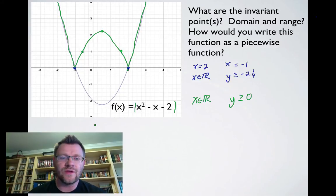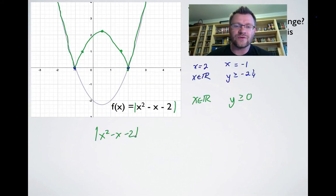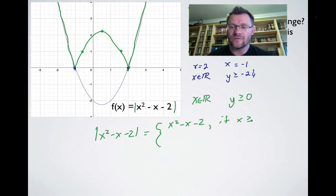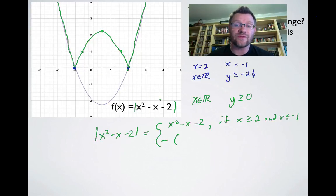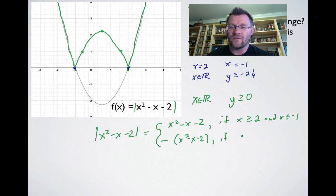To write this as a piecewise function: the absolute value of x² - x - 2 equals x² - x - 2 if x ≥ 2 or x ≤ -1, and equals -(x² - x - 2) if -1 < x < 2. Note: I shouldn't have equal signs in both parts — if I've got the equal signs in the top part, I definitely can't have them in the bottom part.